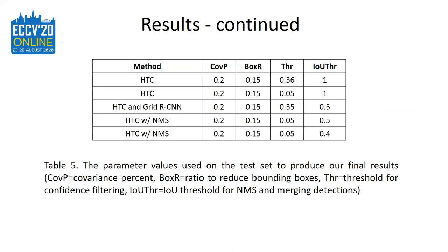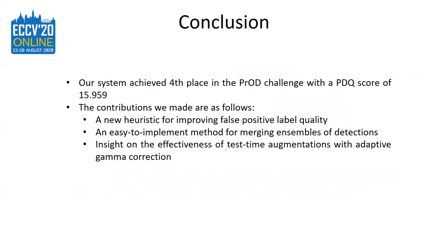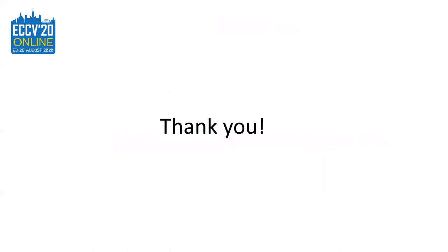The four parameters we fine-tuned are covariance percent ratio, ratio to reduce penalty boxes, threshold for confidence filtering, and IOU threshold for NMS and merging detections. Our proposed method achieved fourth place in the challenge with an empirical score of 15.959. There is significant room for improvement and we will keep working on the problem for better performance. Several contributions we made include: a new heuristic for improving false positive label quality, an easy-to-implement method for merging ensembles of detections, and insight on the effectiveness of test time augmentations with adaptive gamma correction. Thank you for watching.